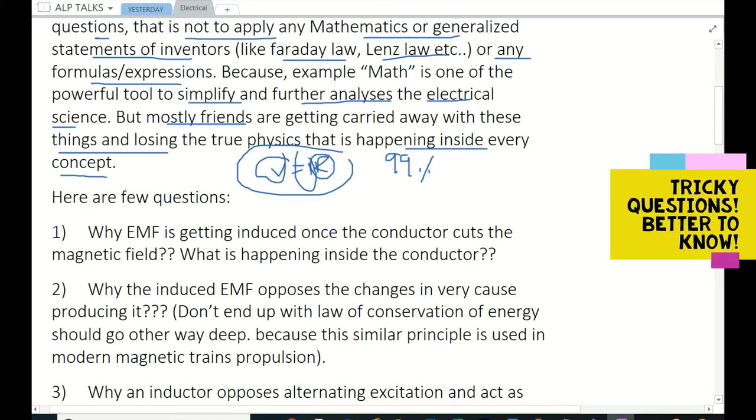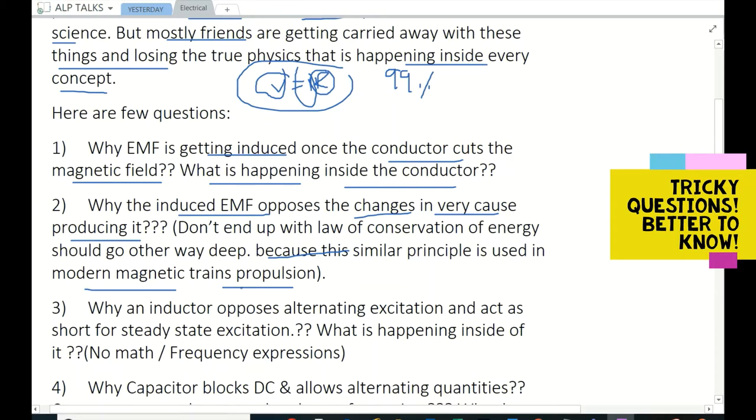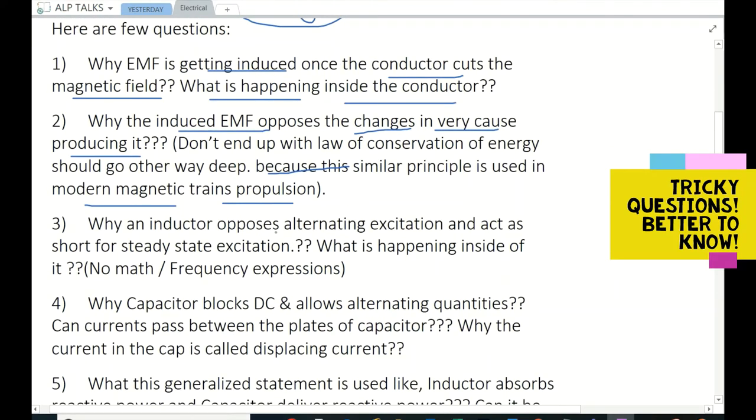Here are a few questions: Why is EMF getting induced once the conductor cuts the magnetic field? What is happening inside the conductor? Why does the induced EMF oppose the changes in the cause producing it? Because this similar principle is used in modern magnetic train propulsion. Yes, whatever magnetic trains we have in today's world, we are using this concept.